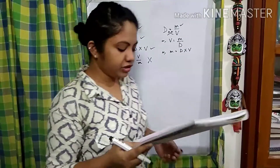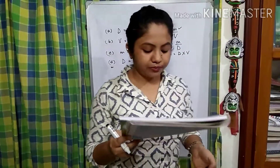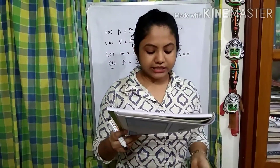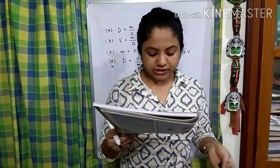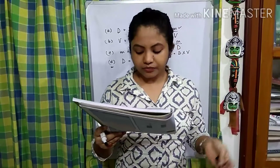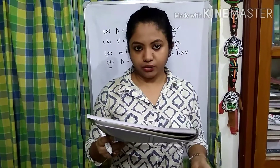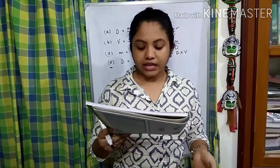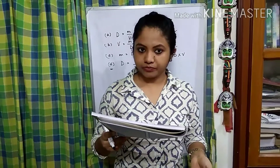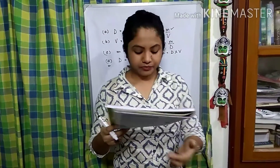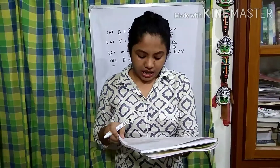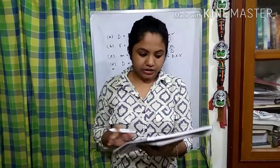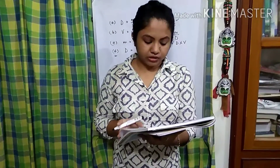Now coming to number 2: the SI unit of density is — we all know that the SI unit of density is kg per metre cube. After that, let us move to the next one.